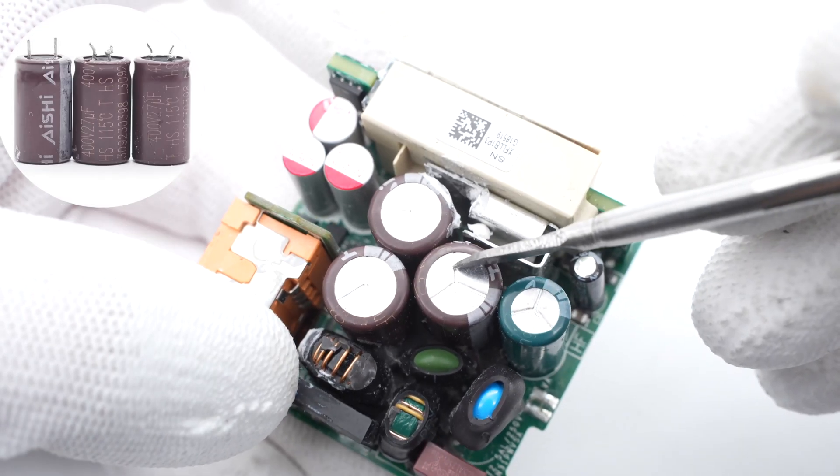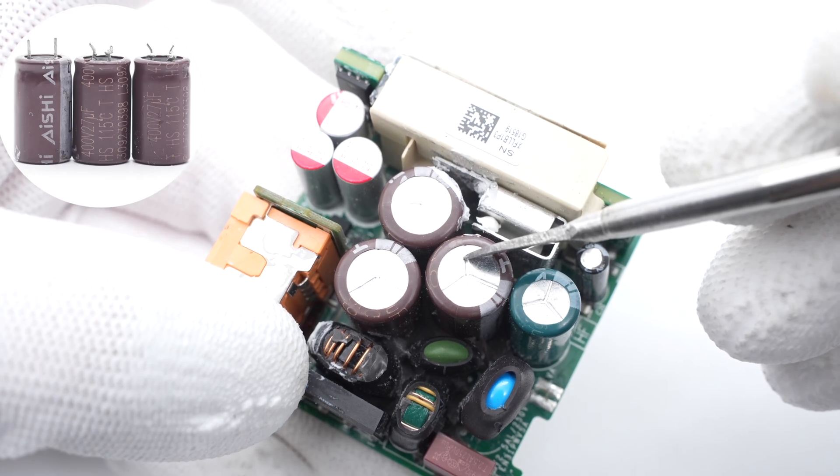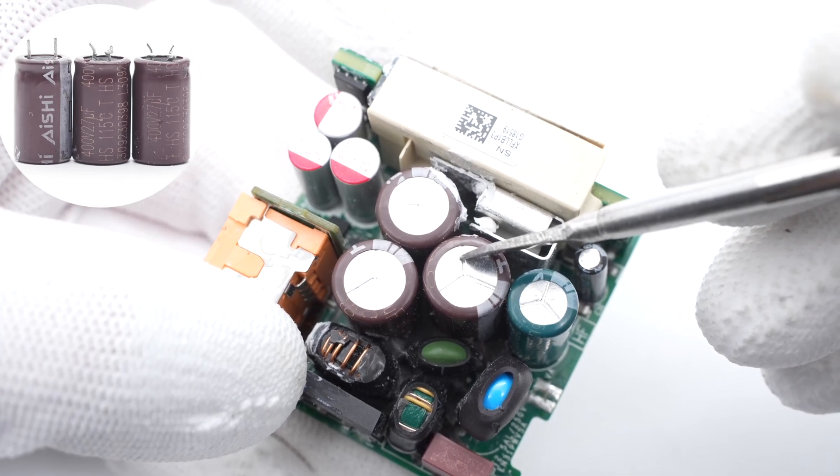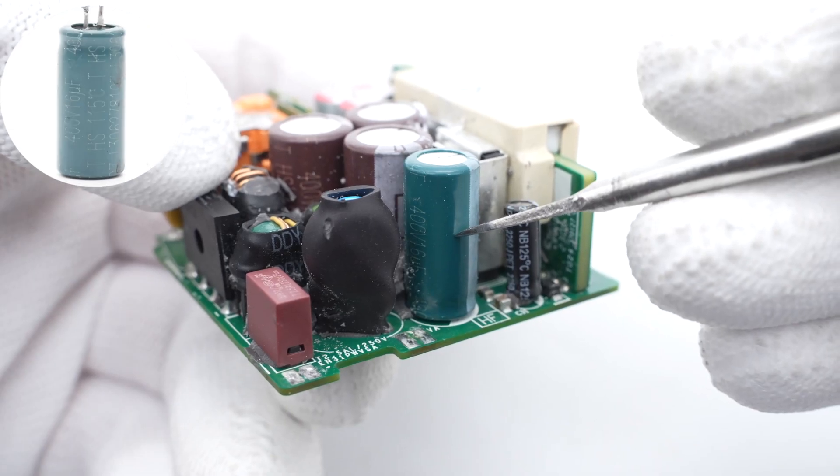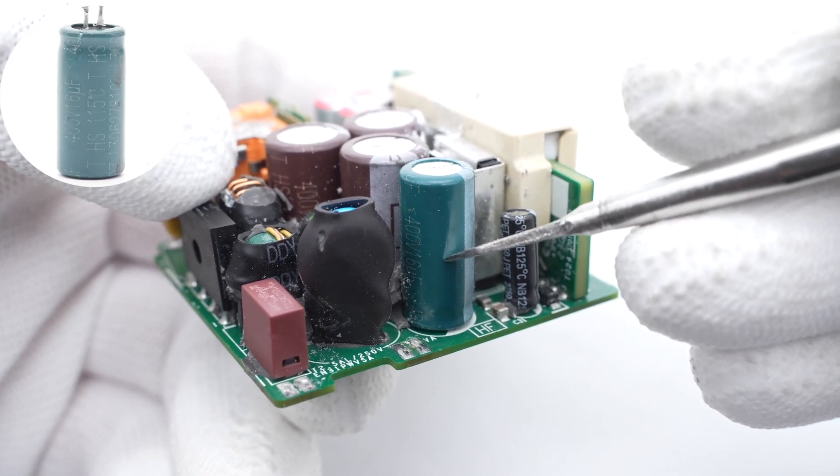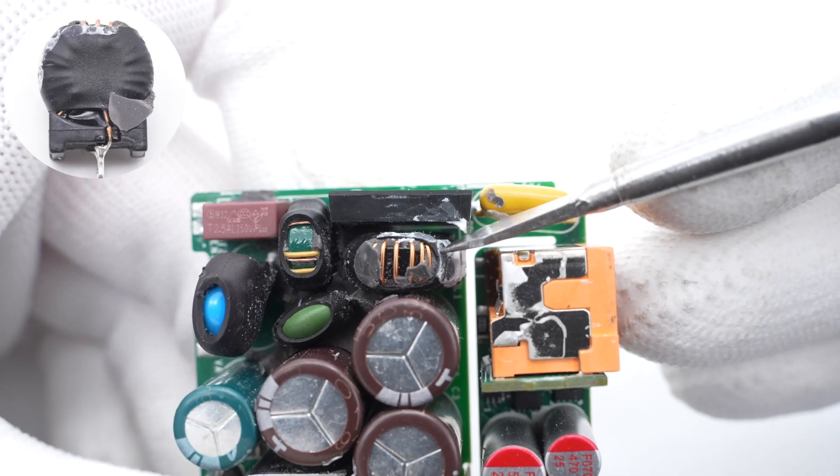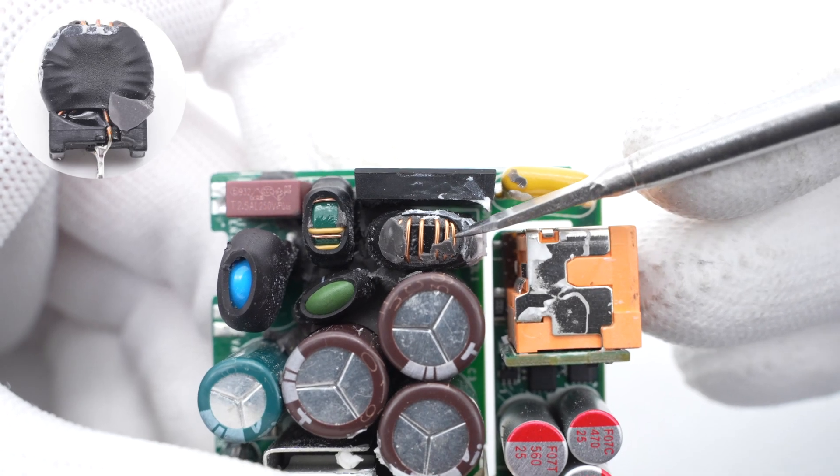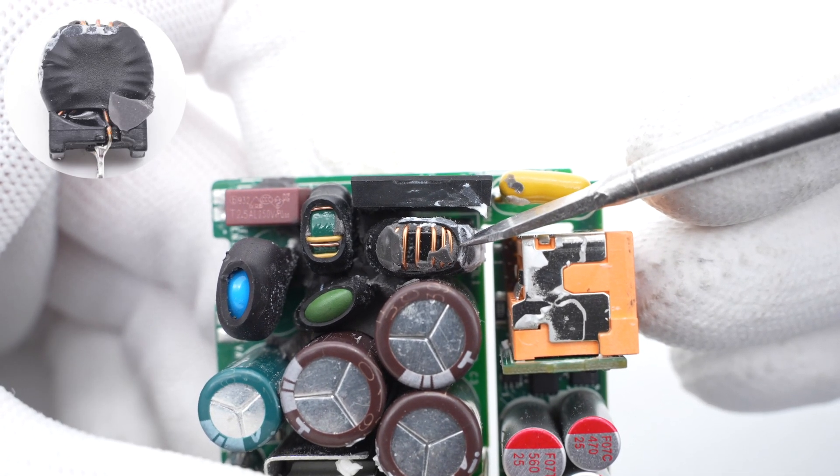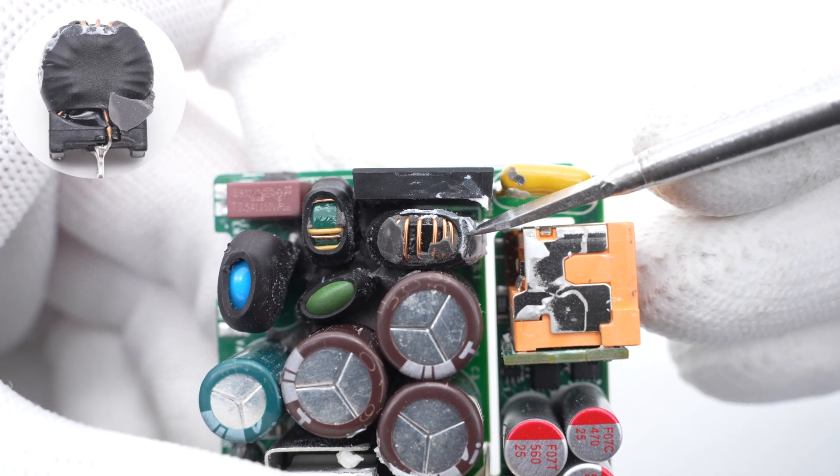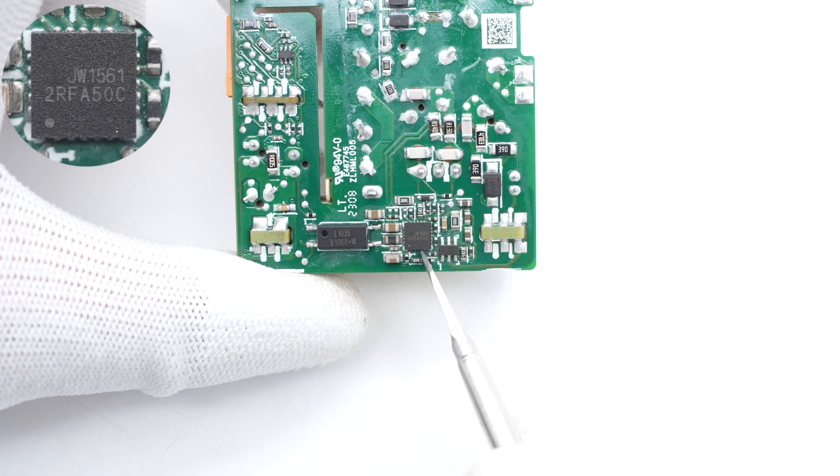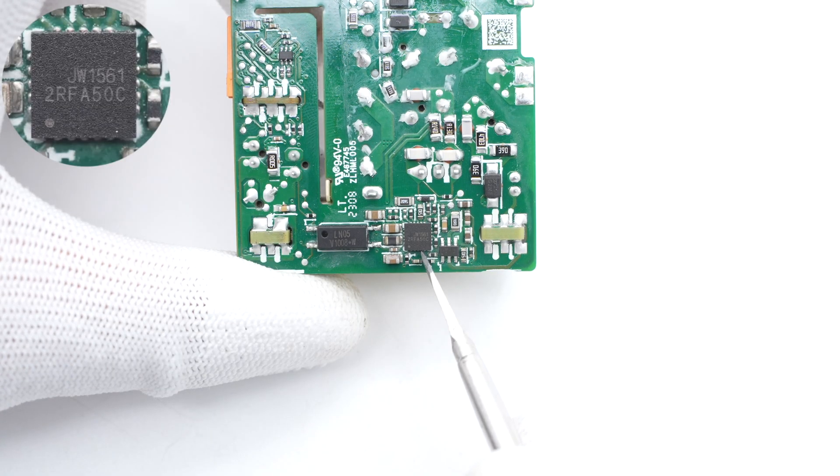Those three electrolytic capacitors are from ANCHI HS series, 400V 27μF for each. Another electrolytic capacitor is 400V 60μF. The differential-mode choke is next to the common-mode choke and rectifier, insulated with heat shrinkable tubing. Here is the primary controller, marked with JW1561.